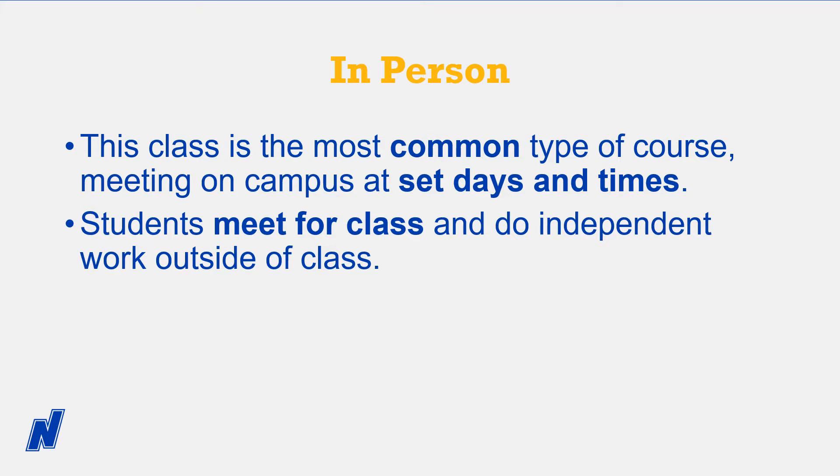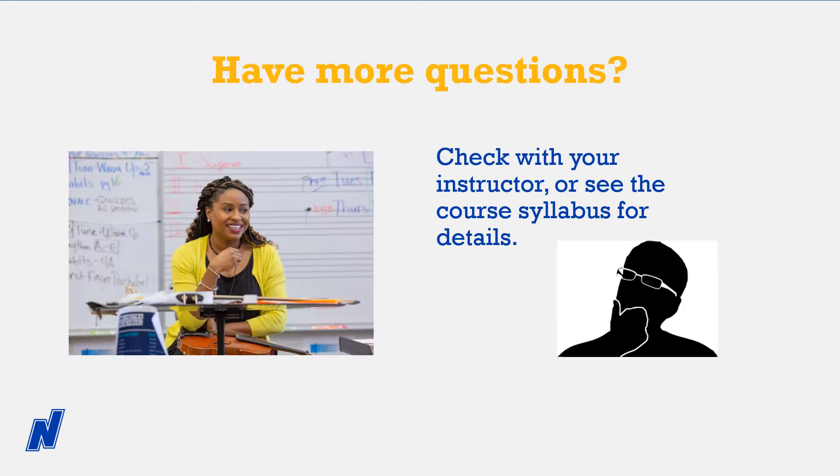An in-person course is the most common type. Students show up for their course on campus on the dates and times posted on the university's schedule of classes. You do your assignments, readings, and other course activities outside of these class meetings. For details, it's always a good idea to reach out to your instructor and to review the course syllabus.